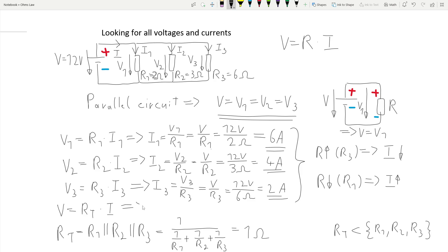Finally, we can calculate the total current by dividing the voltage of the battery by the total resistance, and this gives us 12A.